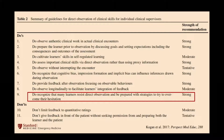Dr. Kogan, in this great article, did essentially the literature search you'd want around direct observation, measuring the strength of recommendations — strong, moderate, etc. One finding rated as strong was: recognize that many learners resist direct observation and be prepared with strategies to overcome that hesitation. So let's talk about some of these strategies.